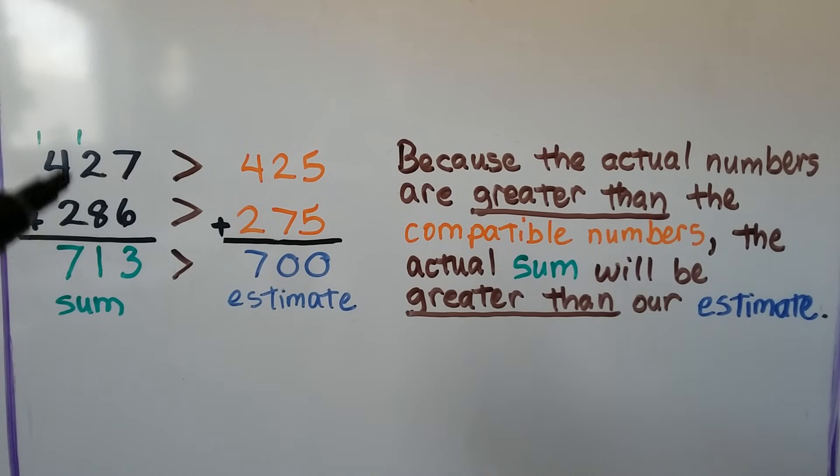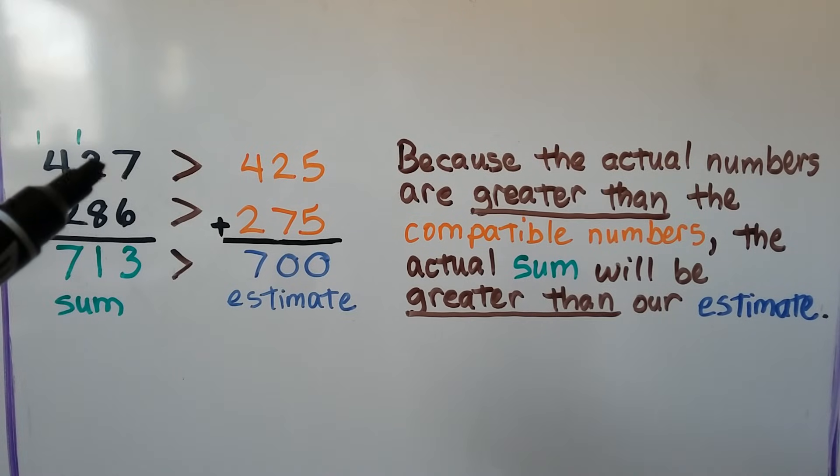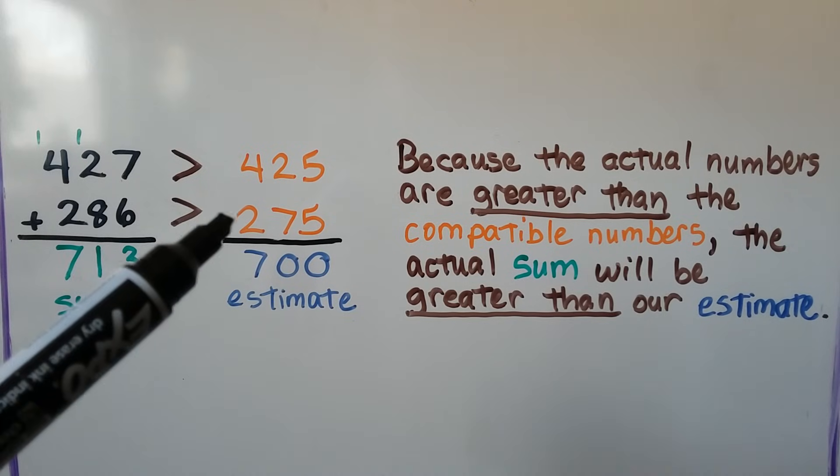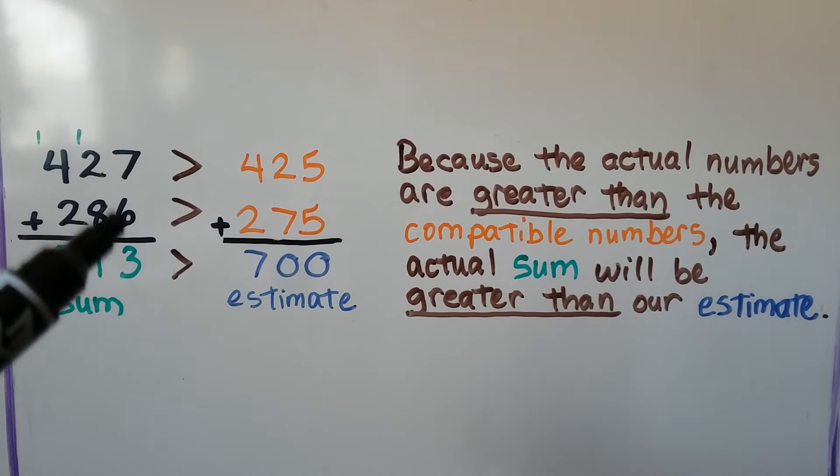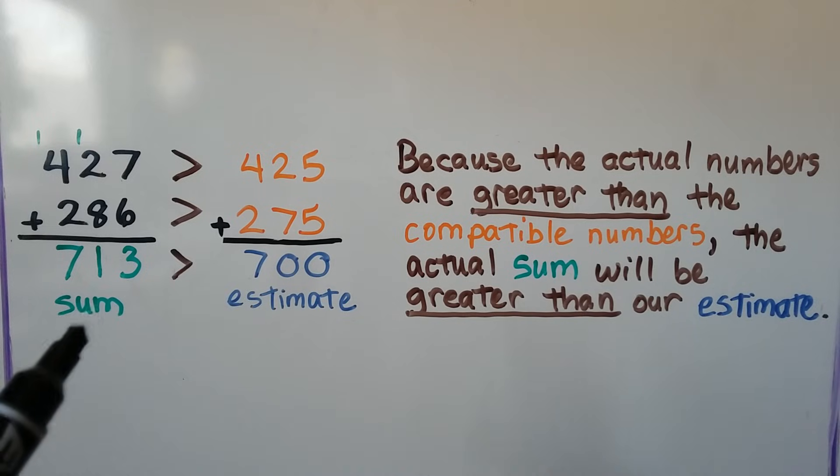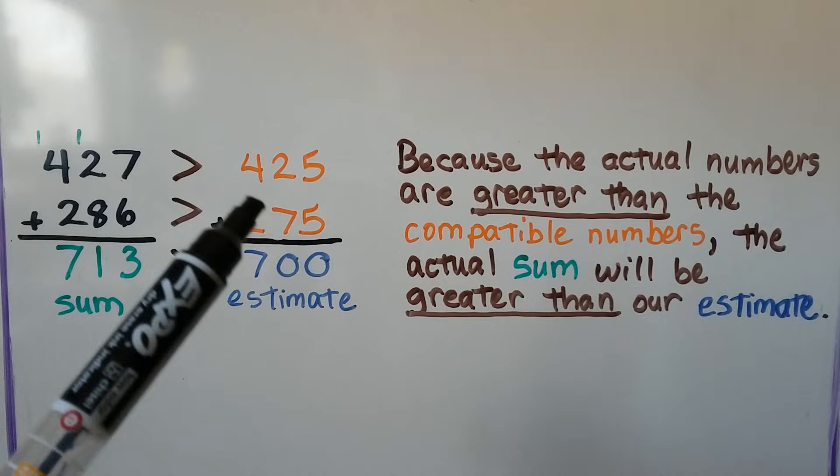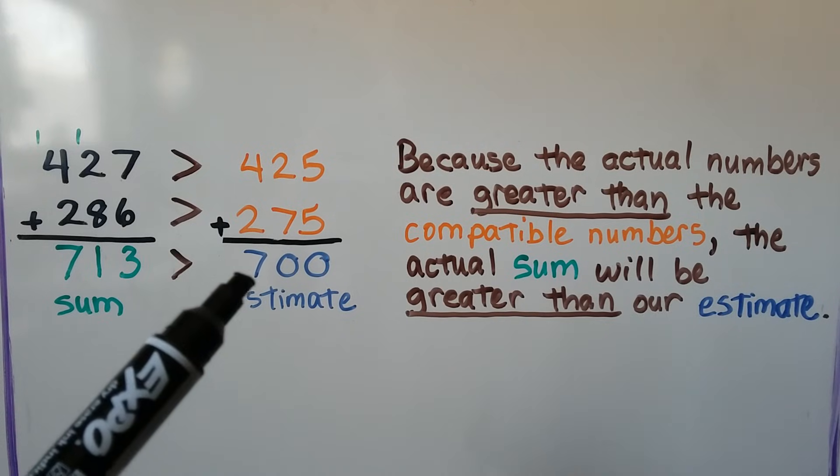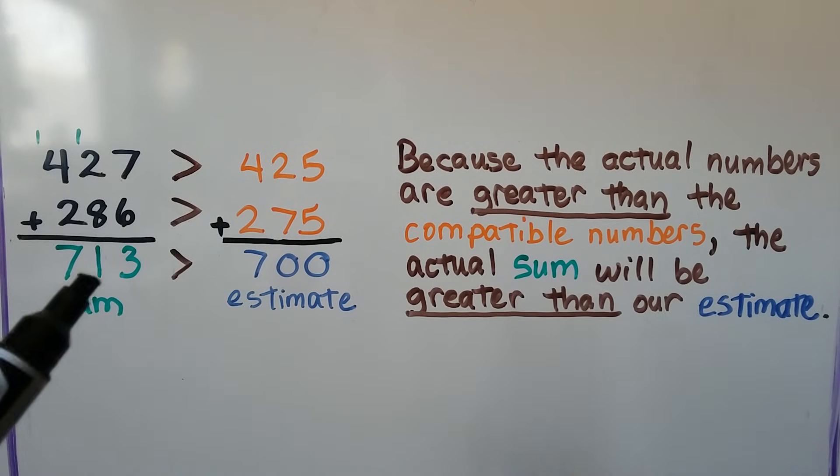Now, because these actual numbers are greater than the compatible numbers, 427 is greater than 425, and 286 is greater than 275. Because these actual numbers are greater than the compatible numbers we used, the actual sum will be greater than our estimate. 713 is greater than 700. And it also works the other way around. If we came up with compatible numbers that were more than the actual numbers, then our estimate would be more than the actual sum.